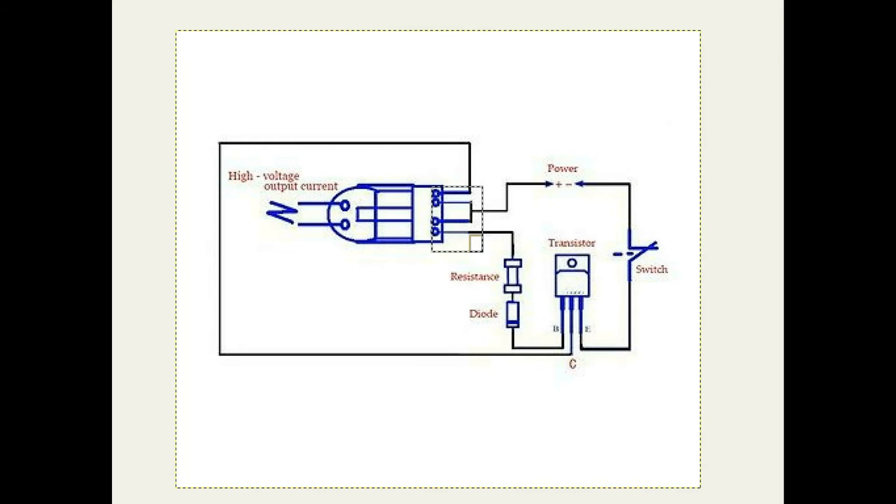The transformer conducts current which then makes the transistor switch off, because when you get a current in one part of the primary, it produces an opposite voltage in the second part of the primary which switches the transistor off. And so then it just oscillates.